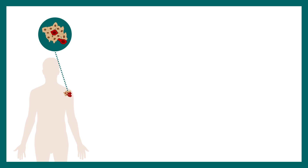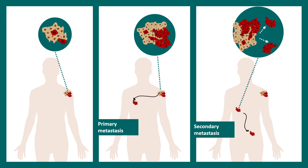There are different classifications of cancer metastasis. There is primary metastasis and there is secondary metastasis. Secondary metastasis means after primary metastasis cancer cells move into another location again, which makes the thing even more complicated.